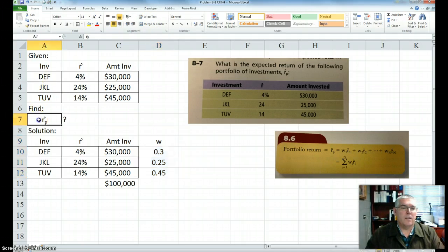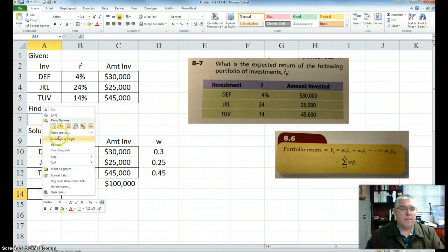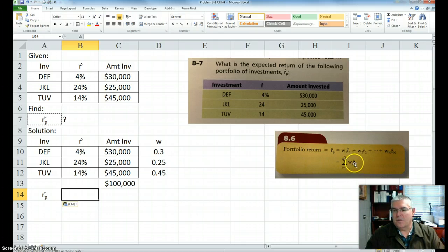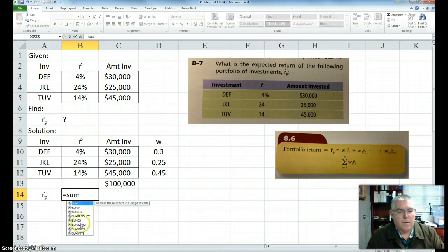So now it's very easy to calculate the return on the portfolio. Is this going to be the sum product? We've done sum product before. Actually, I always say it should be product sum, because it first finds a product and then it adds it together. So anyway, so I'm going to go equal sum product.